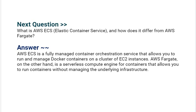Our next interview question is: what is AWS ECS (Elastic Container Service) and how does it differ from AWS Fargate? AWS ECS is a fully managed container orchestration service that allows you to run and manage Docker containers on a cluster of EC2 instances. AWS Fargate, on the other hand, is a serverless compute engine for containers that allows you to run containers without managing the underlying infrastructure.